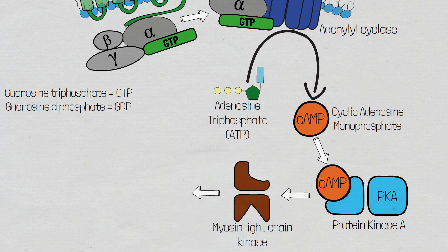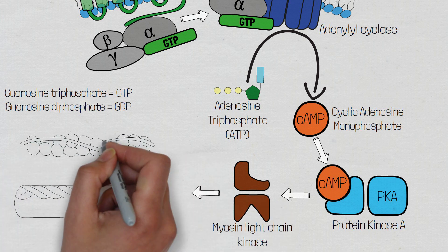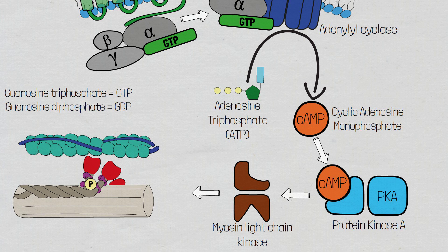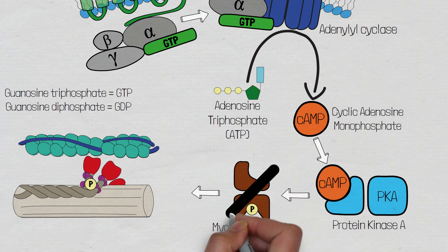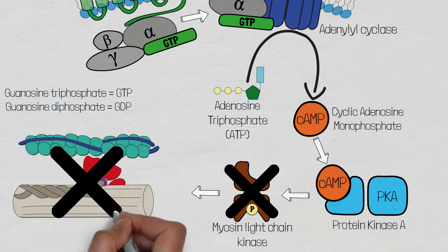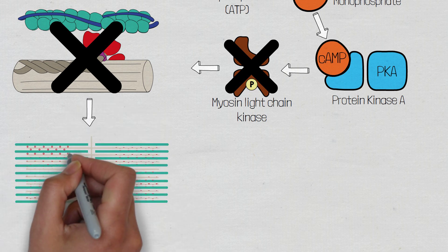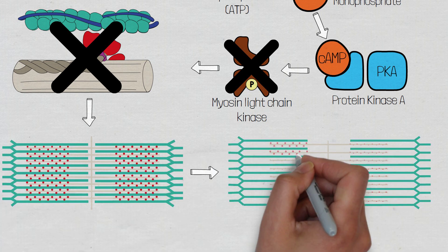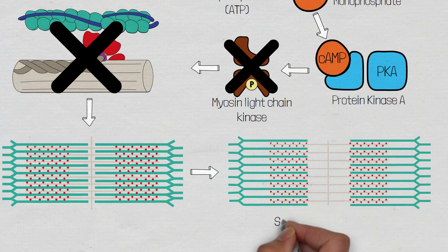The myosin light chain kinase is responsible for adding a phosphate group to the light chain of myosin in the presence of calcium and calmodulin, thereby activating myosin so that it can interact with the actin, causing muscular contraction. So when protein kinase A adds a phosphate onto the myosin light chain kinase, it inhibits it from working. Therefore, there is a reduced activation of myosin, which means there is a reduction in actin-myosin crossbridge formation, leading to reduced contraction and relaxation of the bronchial smooth muscle.